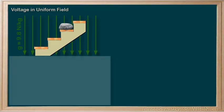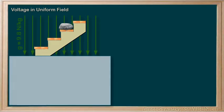Given our uniform field, we know that we can determine the gravitational force on this rock as Fg equals m times g — the mass of the rock times our gravitational field strength g.